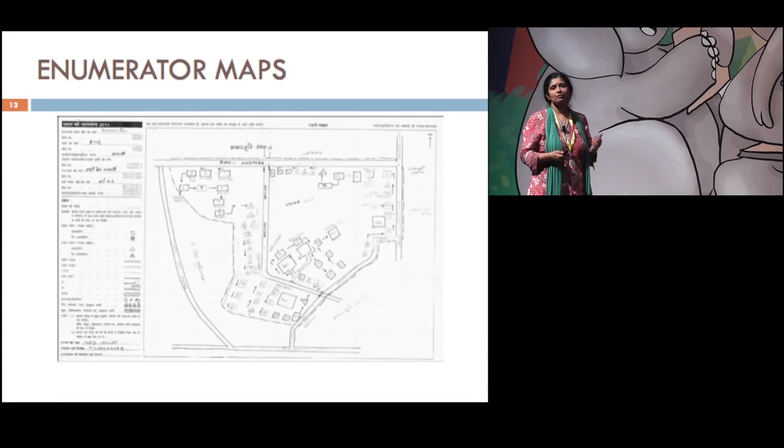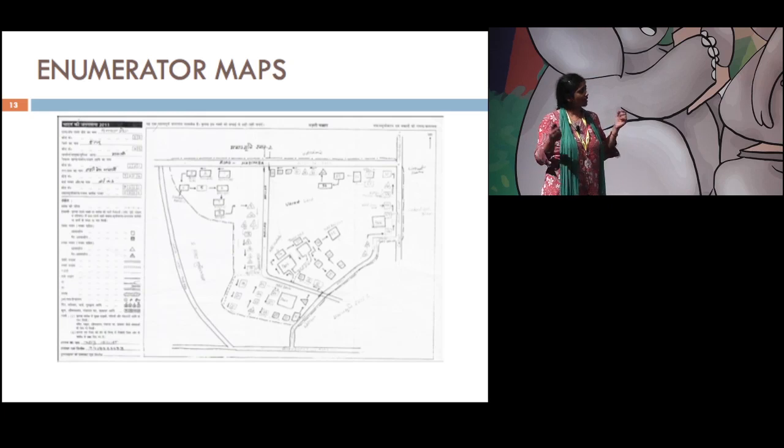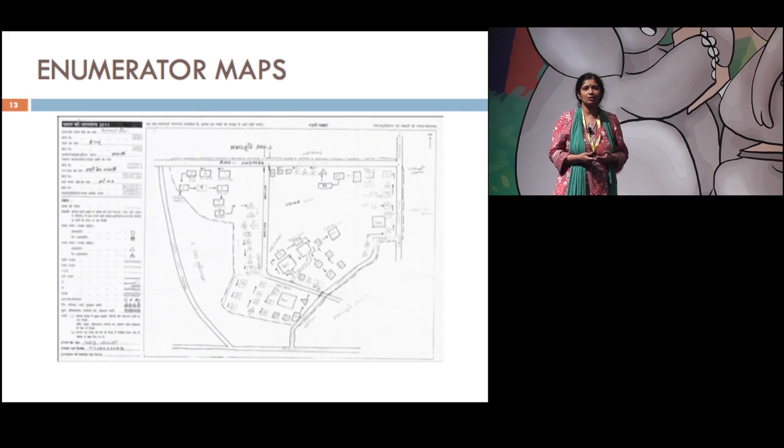Apart from that, we have this very old-fashioned, but extremely useful method of mapping. This is an A3 sheet given to each and every enumerator, and the enumerator, while doing the field work, makes a hand-drawn map of the area, showing the landmarks and showing each and every structure. And this turned out to be extraordinarily useful in Uttarakhand, because in the last two, three weeks, the disaster management authorities have been asking us for the maps of the villages that were swept away, to see what were the structures that actually existed earlier, and this has been very helpful to them.